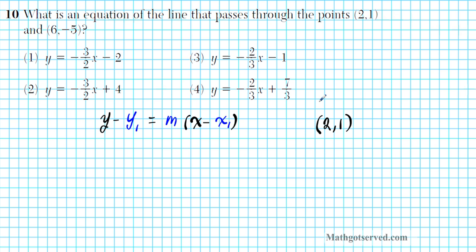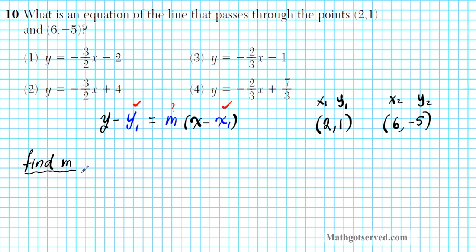We already have X1 and Y1 for the point-slope form; we need to find M, the slope. From your reference sheet, slope M equals rise over run: (Y2 minus Y1) over (X2 minus X1). We substitute the values: Y2 is negative 5, Y1 is 1, X2 is 6, X1 is 2. You have to be careful with your substitution and computation of sums and differences when computing the slope.